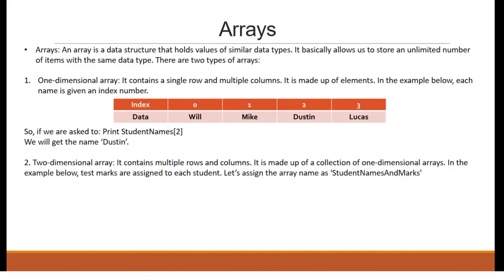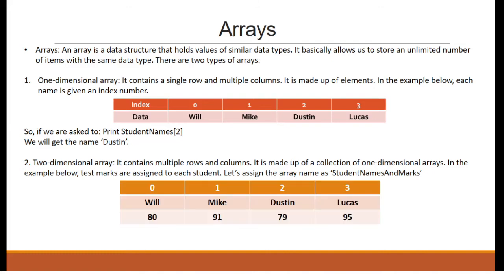Two-dimensional arrays: it contains multiple rows and columns, and is made up of a collection of one-dimensional arrays. In the example below, test marks are assigned to each student. Let's assign the array name as StudentNameAndMarks. So if we are asked to print StudentNameAndMarks[1], we will get Mic, 91.